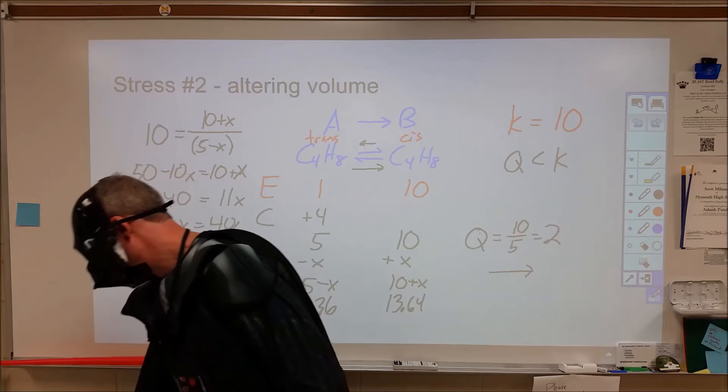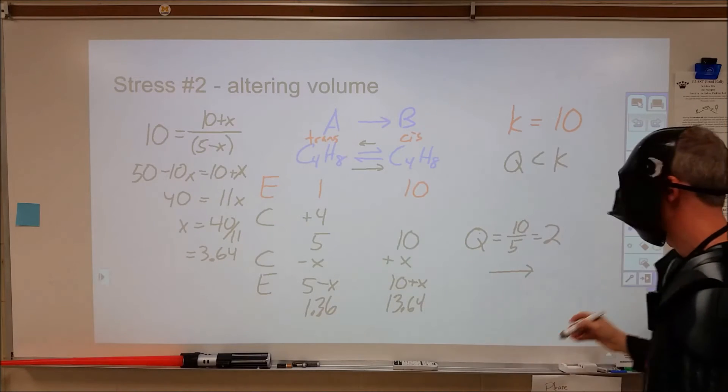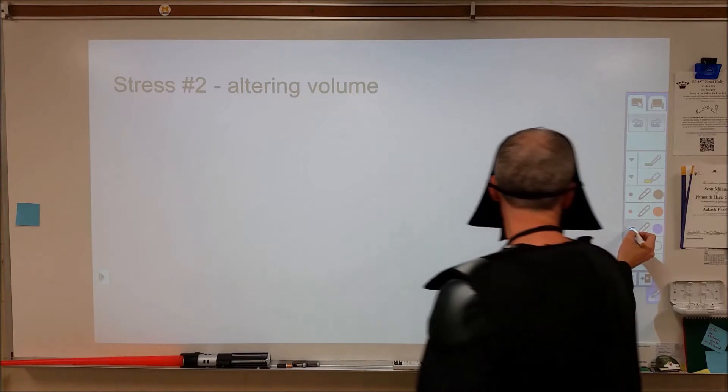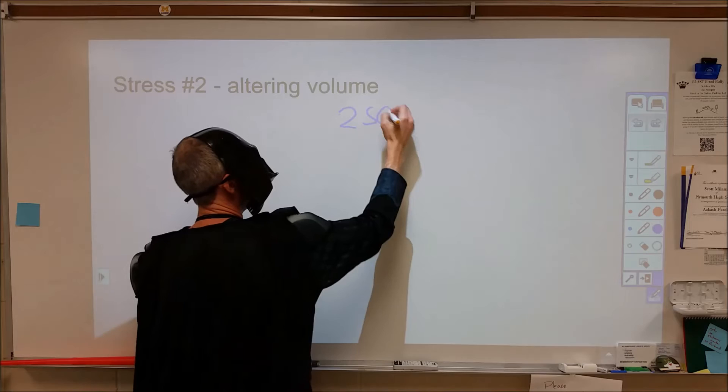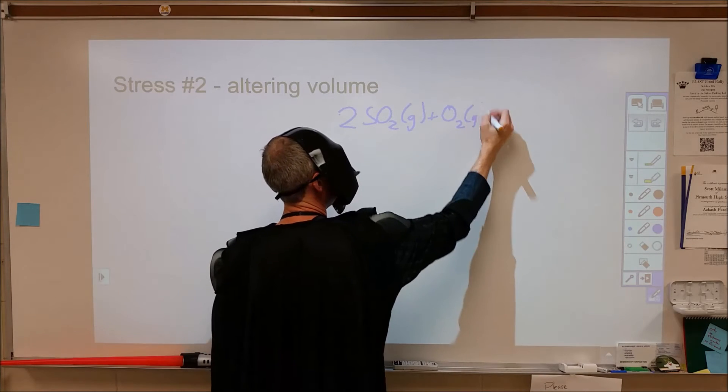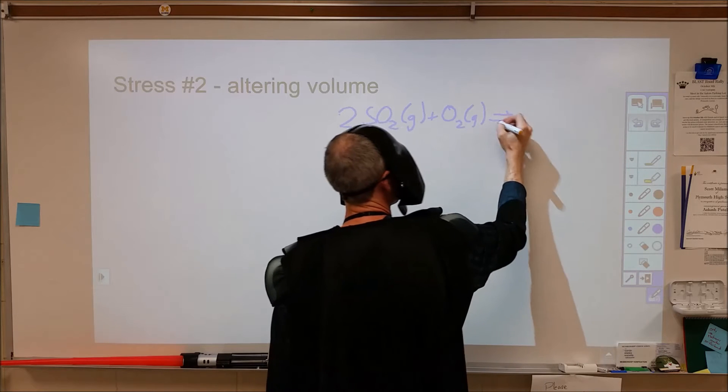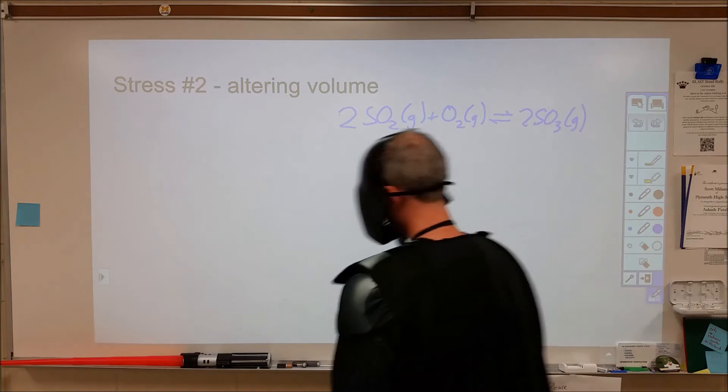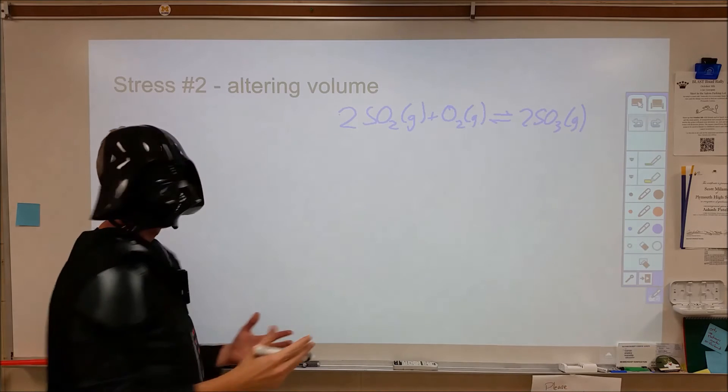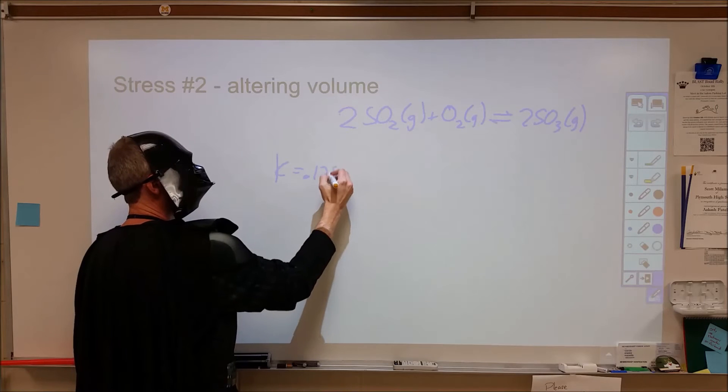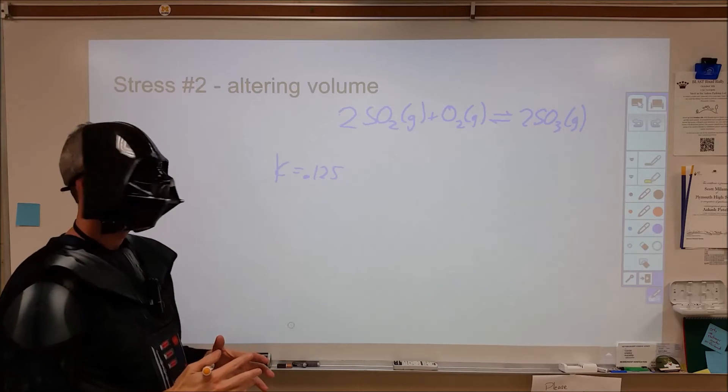Stress number two is not quite as easy to see. It's altering volume. In this case, we're going to look at a case like we did in part two where we're going to take gas molecules where there are uneven amounts on both sides. Now we're going to look at a situation where we're at equilibrium and we have our equilibrium constant at 0.125 and then we're going to change the volume.